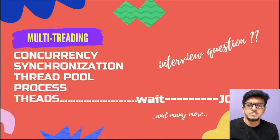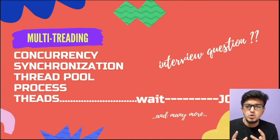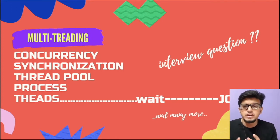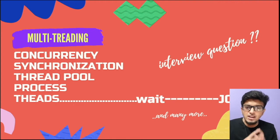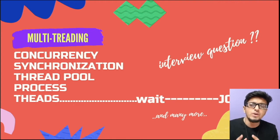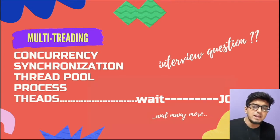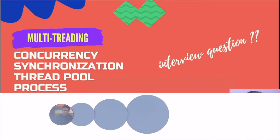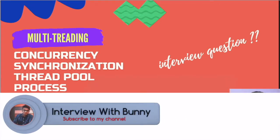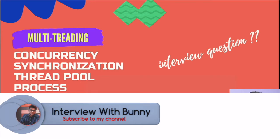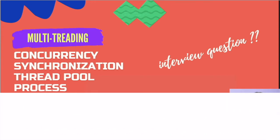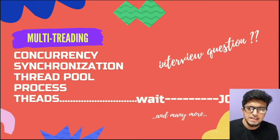In our last video on multi-threading, we discussed in detail how two or multiple threads can communicate with each other, and with the simple technique of wait and notify, how we can communicate between multiple threads within our application. In this video, with that concept in mind, we will be solving one of the important interview questions: printing odd and even numbers with the help of a multi-threaded application.